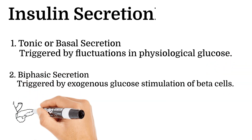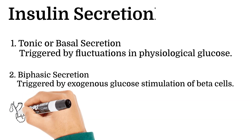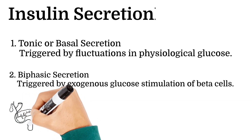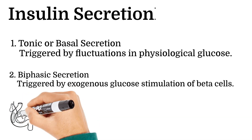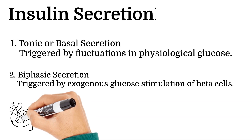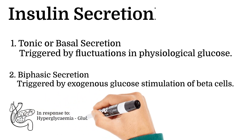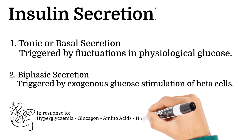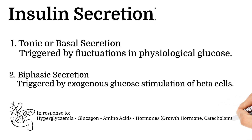In response to hyperglycemia and other factors such as glucagon, amino acids, and hormones including growth hormone and catecholamines, the pancreatic beta cells are stimulated, which initiates the secretion of insulin.